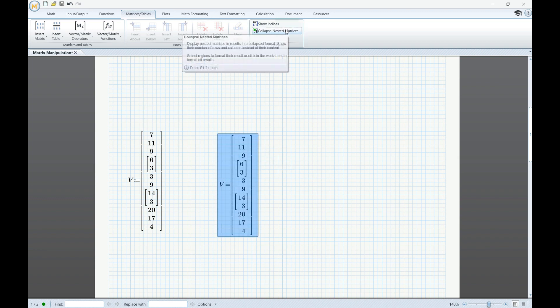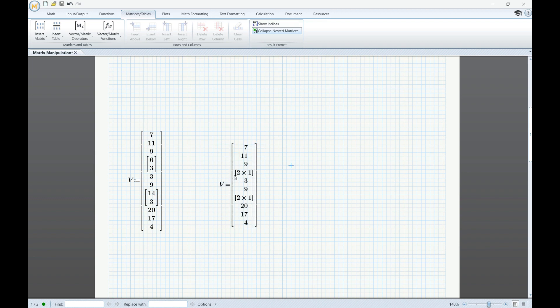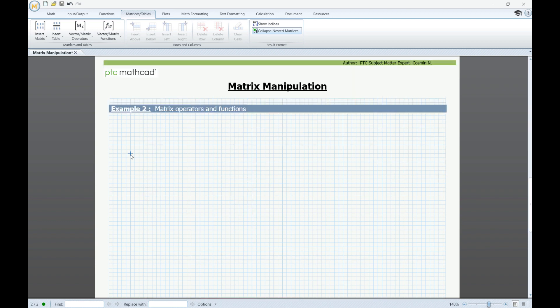If we don't want to do this, we can leave it enabled, and this will only show the size of the two vectors that are nested. In the second example, I'm going to extract some data from the matrix M defined previously that will be used to create new arrays of data using some of the built-in functions and operators.